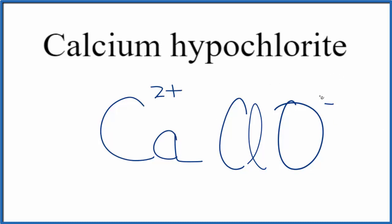charge. We said the hypochlorite is one minus, and that's on the whole hypochlorite ion. So in order to make these charges balanced to give us a net charge of zero, we need two